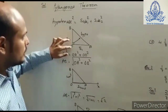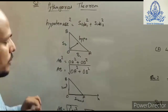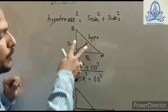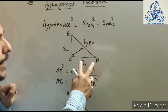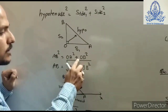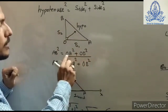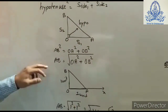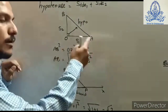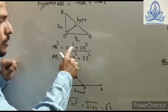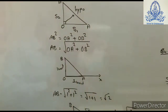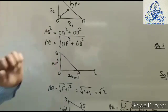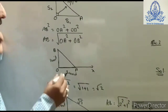As per Pythagoras theorem, AB squared — the hypotenuse squared — equals side 1 squared plus side 2 squared, that is AO squared plus OB squared. If you take the square to the other side of the equals sign, the hypotenuse becomes the whole square root of the sum of the two sides squared.